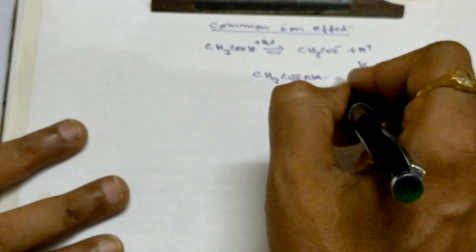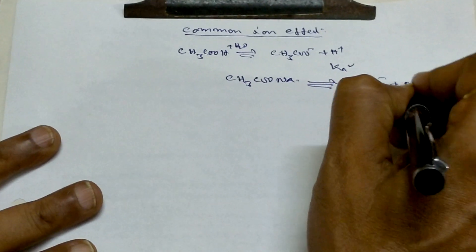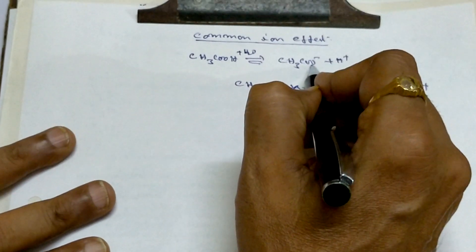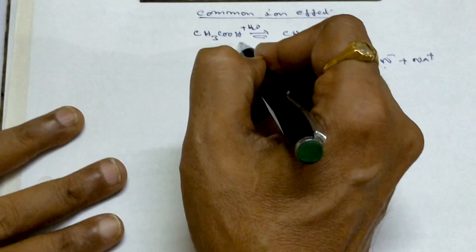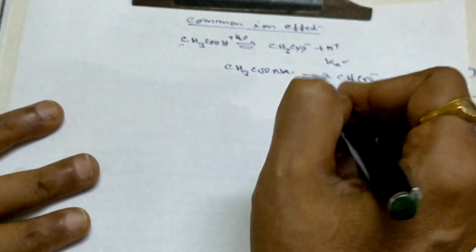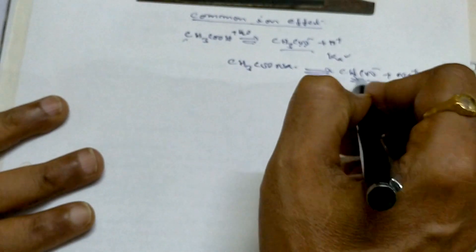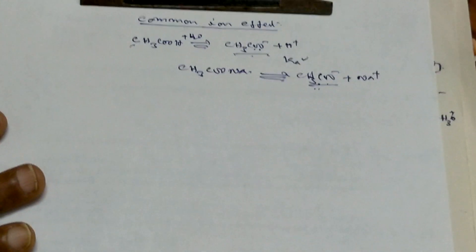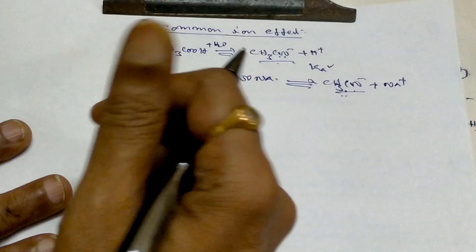When sodium acetate is added to water, it dissociates into acetate ion and sodium plus. So acetate ion is becoming more on the right side. Then, to counter that as per Le Chatelier's Principle, there will be a shift to the left side. This acetate from sodium acetate is the same as the acetate from acetic acid — so this is called a common ion. Because of the common ion effect, there will be a shift in equilibrium to the left side.